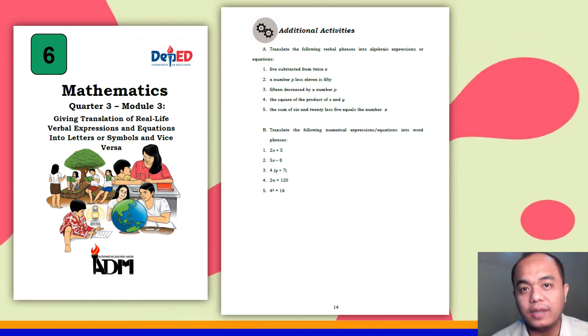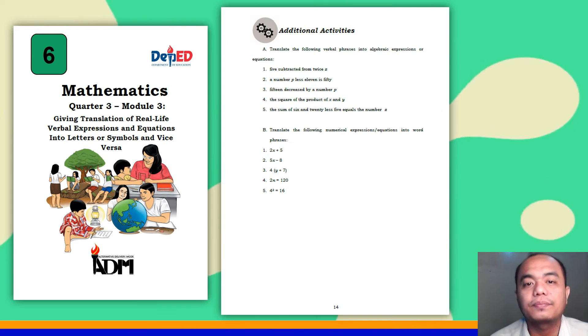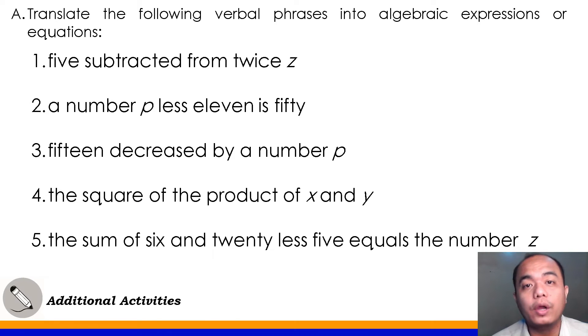This time, let's answer the additional activities of your lesson 1 still in your module 3. I hope you are now holding your answer for this part of your module. Direction is, translate the following verbal phrases into algebraic expressions or equations. Let's have number 1, five subtracted from twice Z. Oh, don't be confused. We have a clue here with 'from.' So, it means that twice Z is what will be subtracted by 5, right? That's 2Z minus 5. The meaning of twice is 2, right? 2 times. So, this is 2 times Z minus 5.